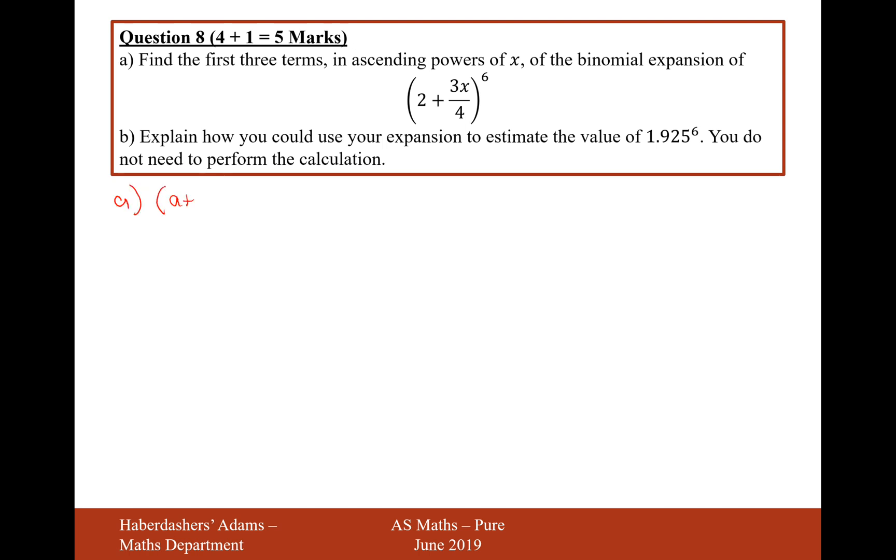So just a reminder of the binomial formula expansion that you get in the formula booklet. It's (A plus B) to the power of N equals A^N plus (N choose 1) A^(N-1) B^1 plus (N choose 2) A^(N-2) B^2. And that will be the first three terms.